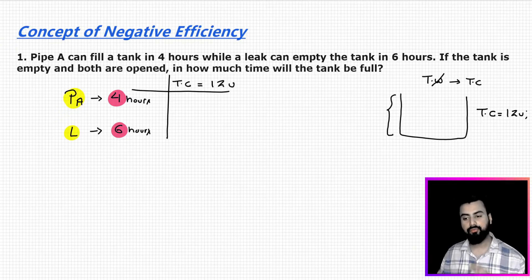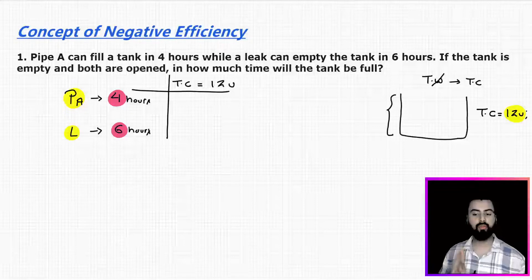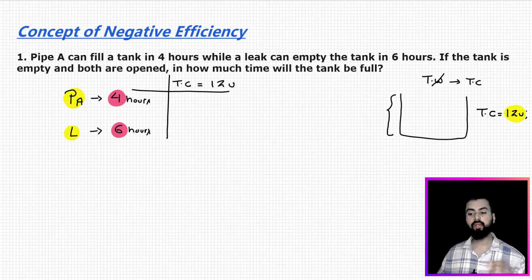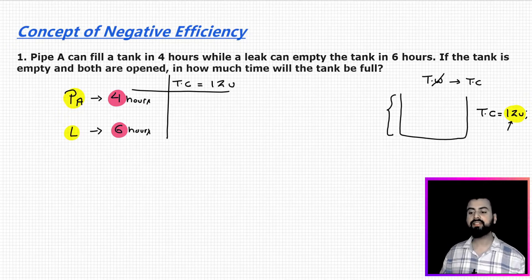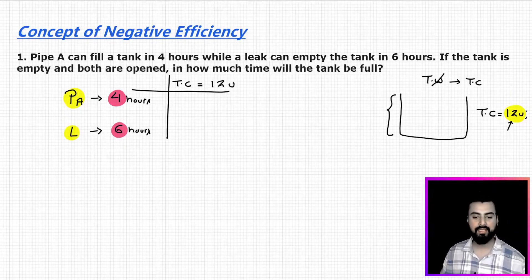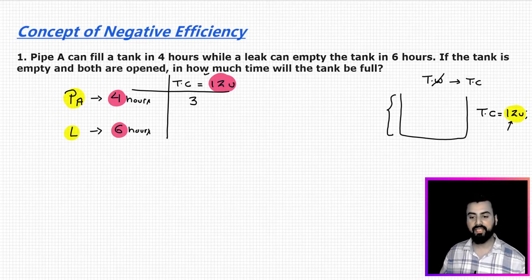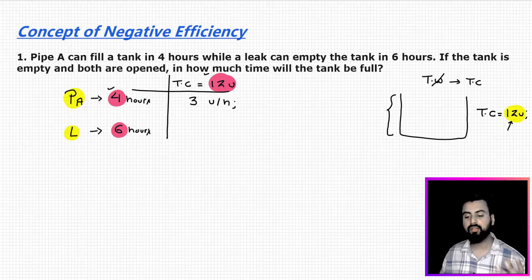If I try filling the tank, the maximum it can hold is 12 units — to fill it completely, I must fill 12 units. Likewise, to empty the tank, I have to pour out 12 units. So 12 units is the volume of the container. Now let me find the efficiency of the two entities. The pipe can fill a tank of 12 units in 4 hours, so in 1 hour the pipe fills 3 units. That is the efficiency of the pipe.